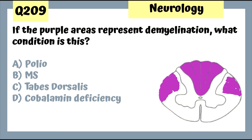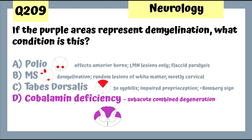Question 209: If the purple areas represent demyelination, what condition is this? This is vitamin B12 deficiency — cobalamin deficiency. We see subacute combined degeneration and those neurological deficits. You can look at other conditions — polio, MS, and tabes dorsalis — and which area of the spinal cord they affect.